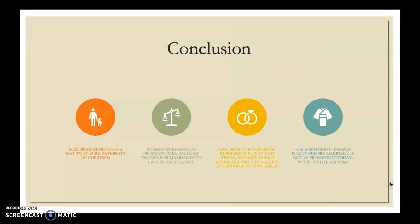In conclusion, weddings started as a way to ensure paternity of children. As weddings evolved, women were seen as property and could be traded in marriages to create alliances. The outfit of the bride represents purity and virtue, and her father gives her away to signify the transfer of ownership. The emphasis on female purity before marriage is not as prominent today, but it obviously is still around.